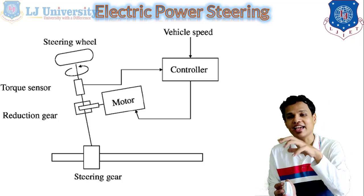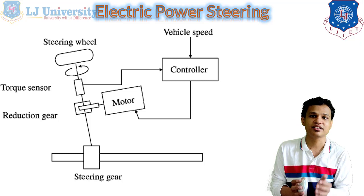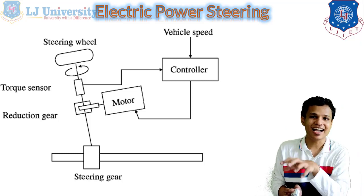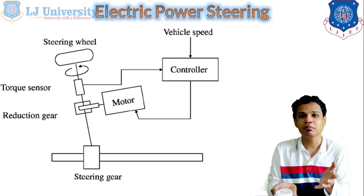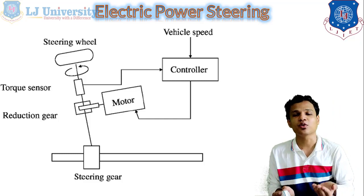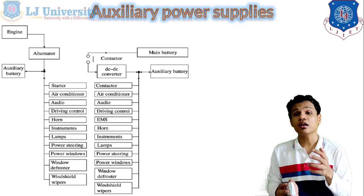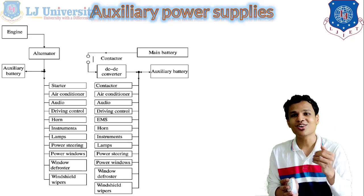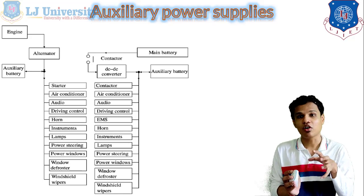Electric power steering is very accurate and most electric vehicles now use this type of power steering rather than the hydraulic system. This removes hydraulic fluid from the system, making it fully electric, and with the multiple sensors already present in an electric vehicle, one more sensor is not a problem. Next are the auxiliary power supplies — the components which require auxiliary power, supplied with the help of an auxiliary battery.